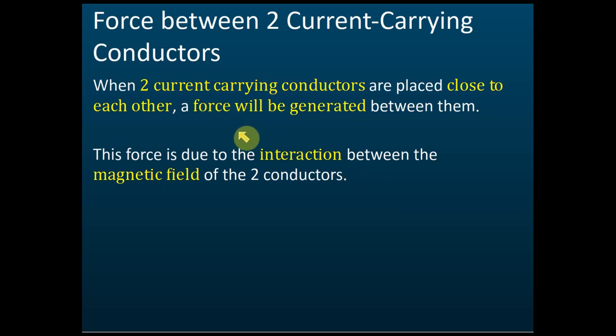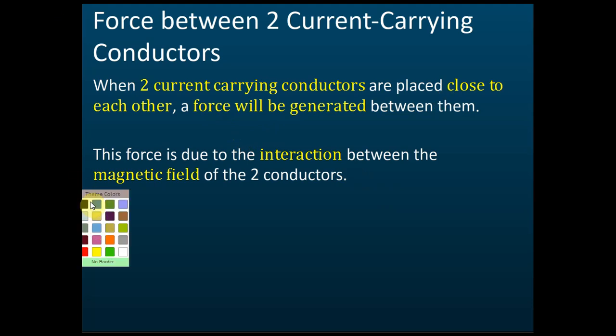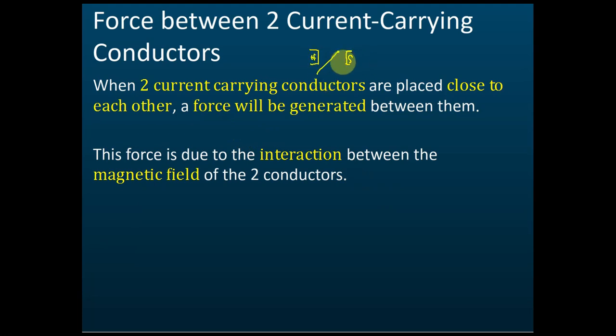If you have two current-carrying conductors placed close to each other, a force will also be generated. Just now we discussed one current-carrying conductor placed in a magnetic field — with a north-south magnetic field and current flowing through the conductor. But if you put two current-carrying conductors close to each other, a force will also be generated, and that is also due to the interactions between the two magnetic fields.